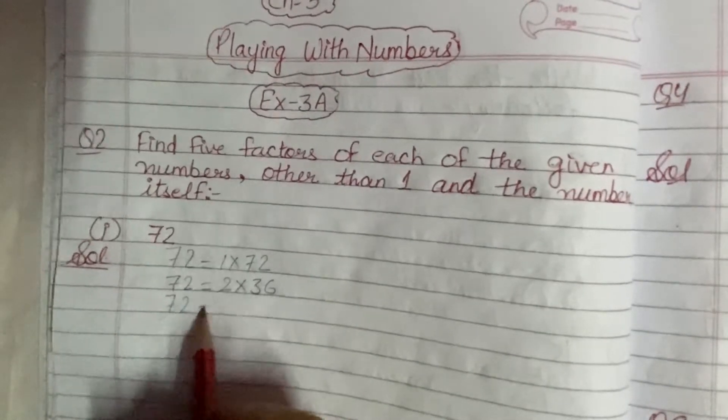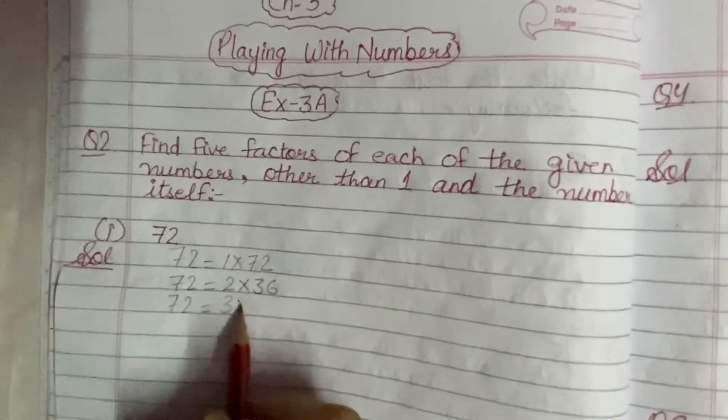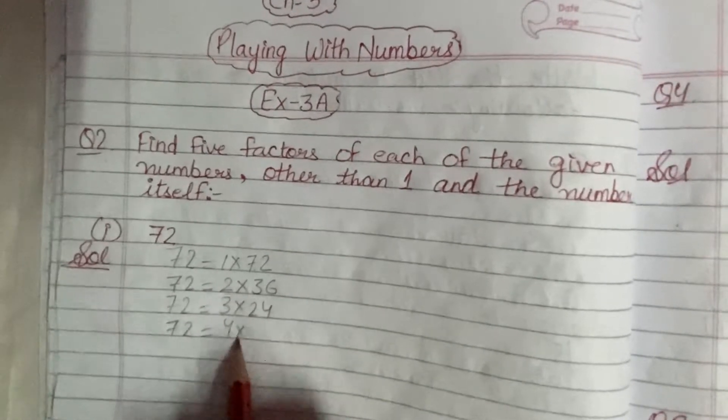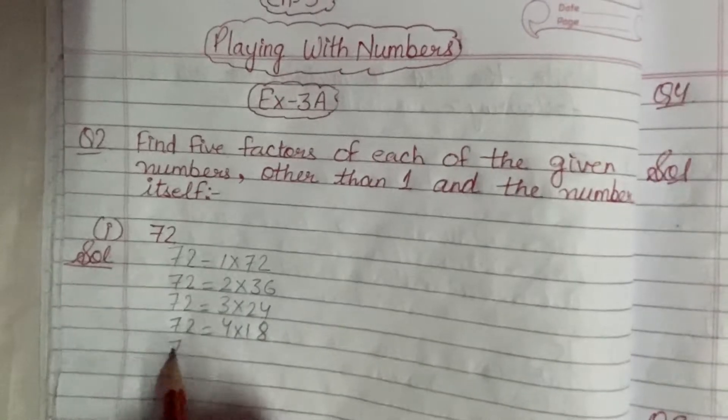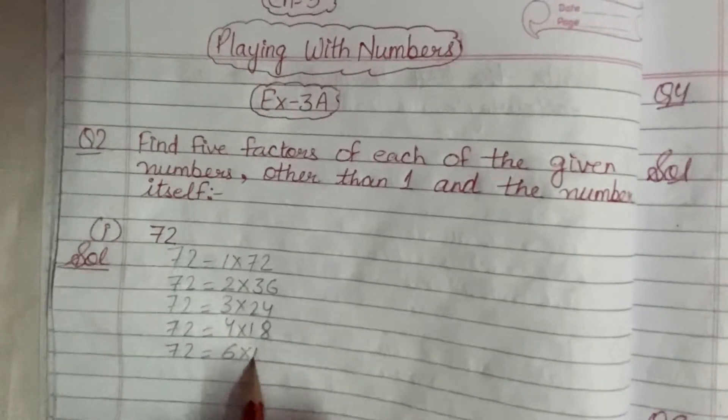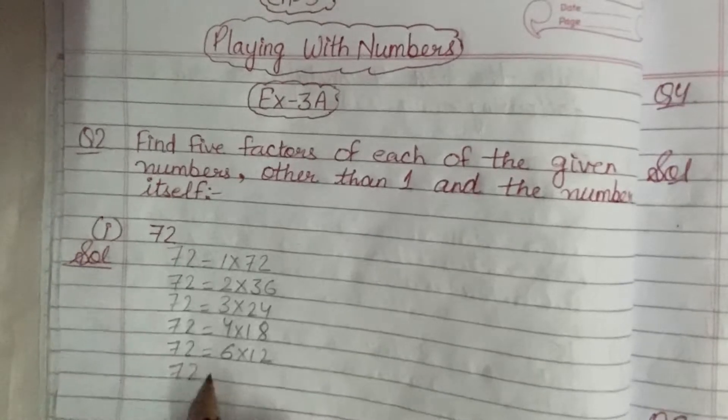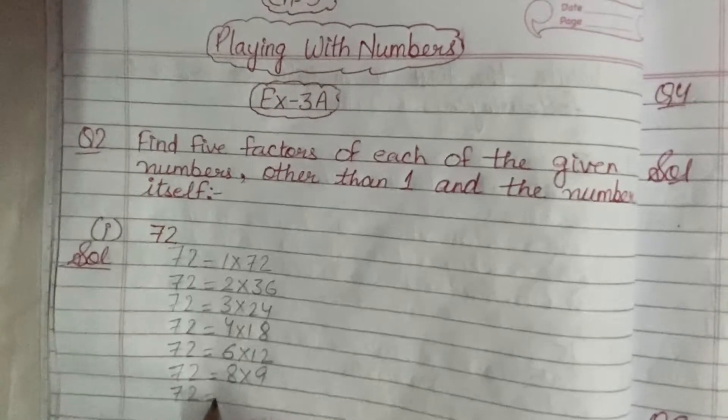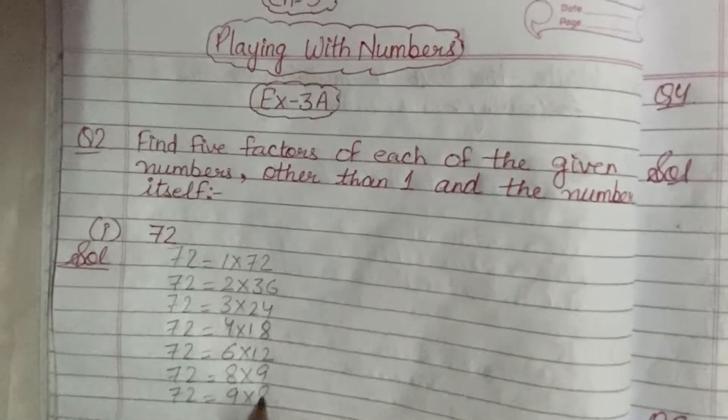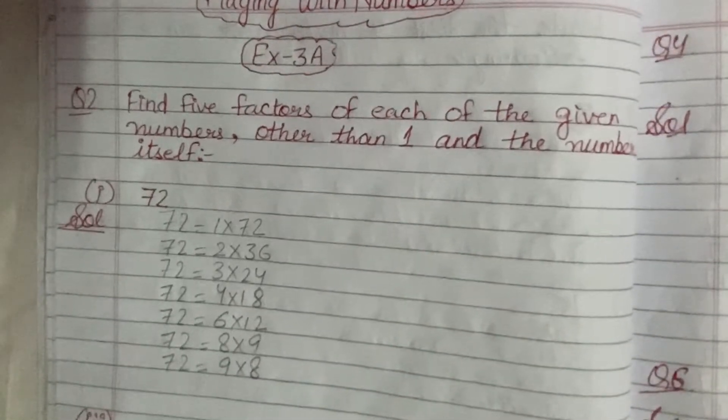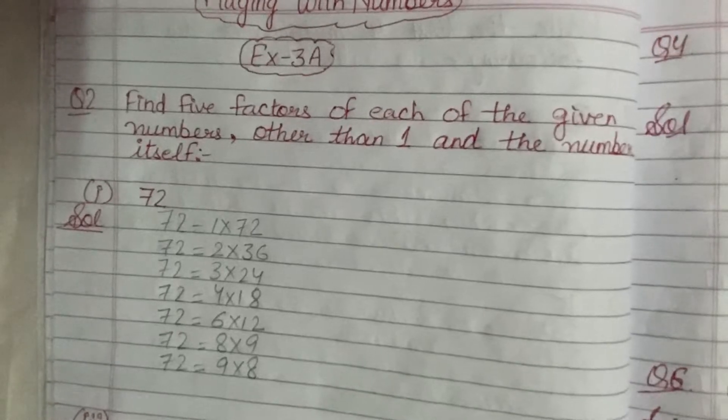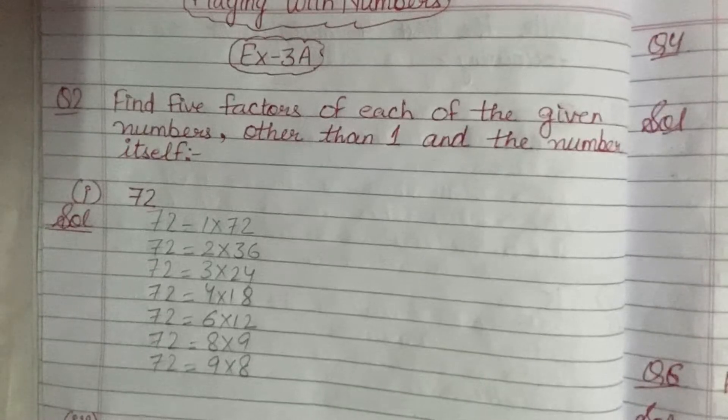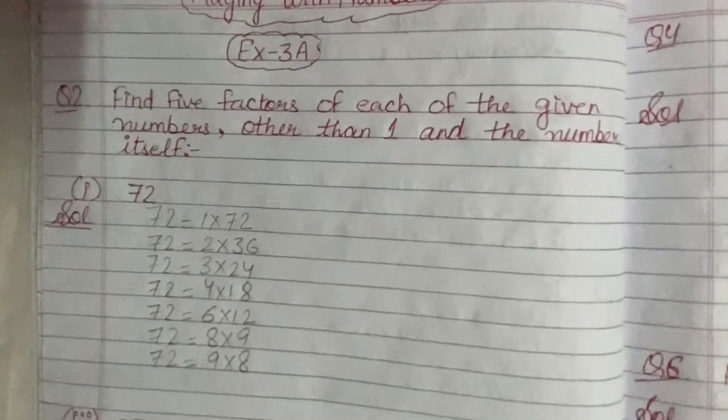72 can also be written as 3×24. Again, 72 can be written as 4×18, 6×12, then 8×9, and 9×8. Now you have to write down the 5 factors of each of the given numbers other than 1 and the number itself.